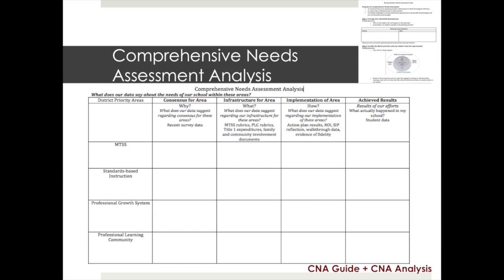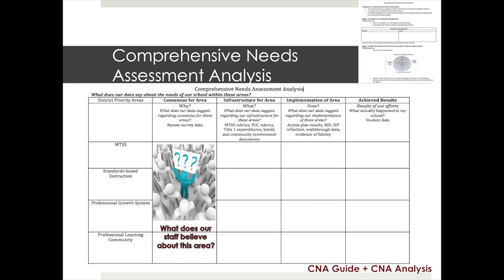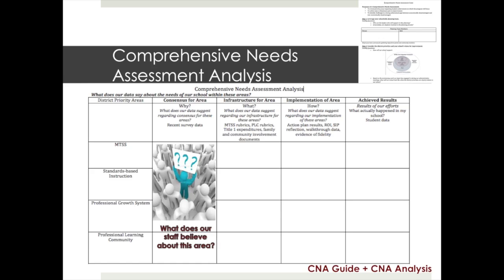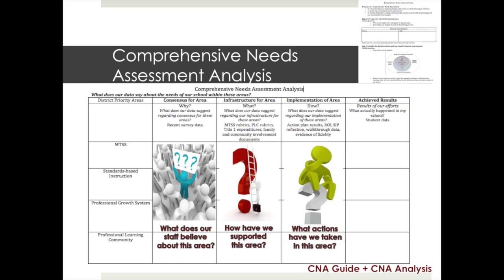As you use the CNA analysis document, the guiding questions in each column will help you focus your team on the discussion needed. As you analyze consensus, for example, use your data sources to answer: what does our staff believe about each area? Your recent survey data and the MTSS and PLC rubrics will be helpful here. Use these rubrics as well as the return on investment reflection and any action plans to help you determine how we have supported each area. As you review action plans, it is important to consider what actions have we taken in this area — in other words, did we do what we said we would do? This can have an impact on how you look at your actual results.